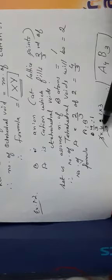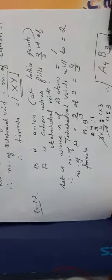Two-thirds of 2 equals 4/3, so A equals 4/3. The ratio of A to B is 4/3 : 1. Multiplying both by 3 gives the ratio 4 : 3. Therefore A is 4 and B is 3, and the compound formula is A₄B₃.